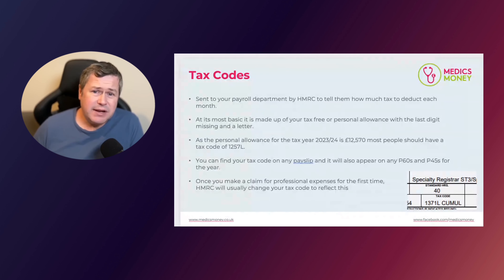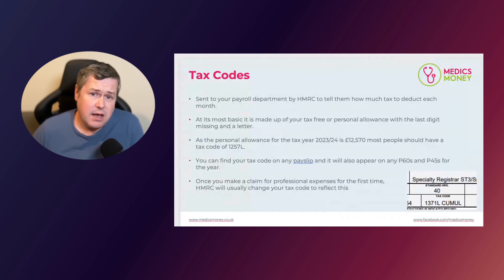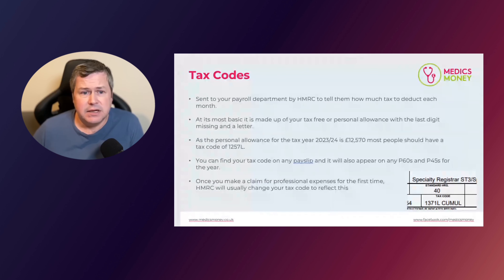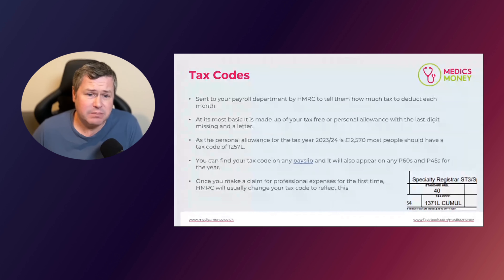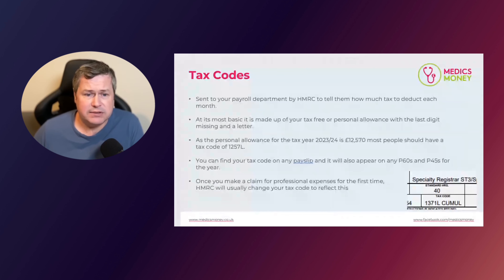You may also see the word 'cumul' next to the tax code. That means it looks at your tax position at the time it is applied within that tax year. Usually it means you're getting one-twelfth of your personal allowance every time you get paid each month, but this can adjust based on what's happened previously in the tax year. For example, if you've been out of work for a couple of months, the tax code can give you additional personal allowance so that your tax position catches up.